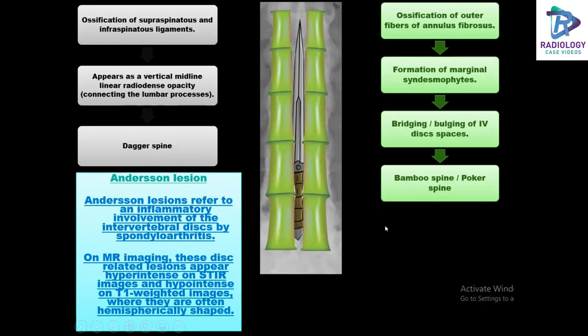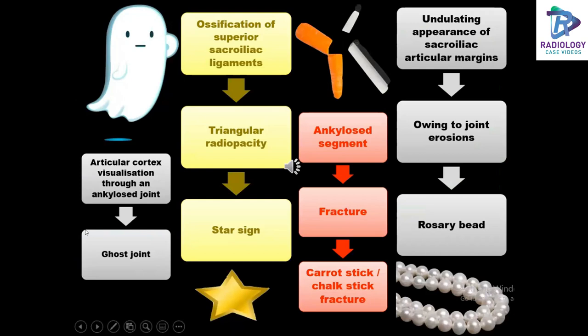Anderson lesions refer to inflammatory involvement of the intervertebral discs by spondyloarthritis, appearing T2 hyperintense on MR imaging. The ghost joint is the articular cortex visualization through an ankylosed joint. The star sign in the SI joints is a triangular radio-opacity due to ossification of the superior sacroiliac ligaments. Carrot or chalk stick fractures occur where the ankylosed segment is fractured. The rosary bead appearance in the SI joints is due to joint erosions causing an undulating appearance of the sacroiliac articular margins.